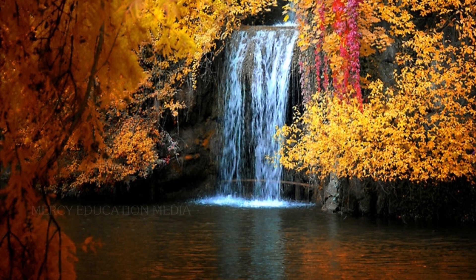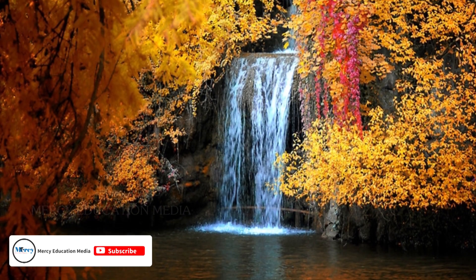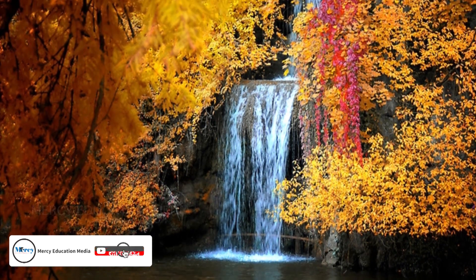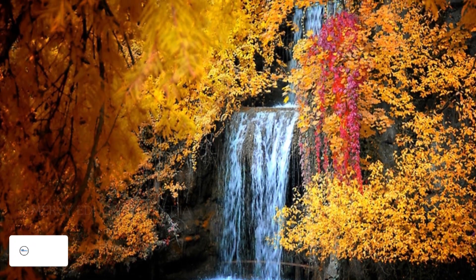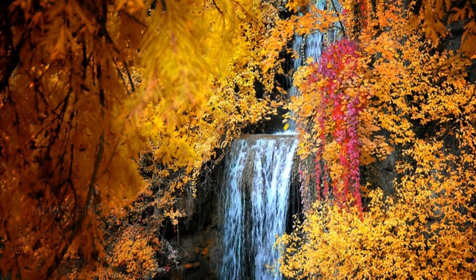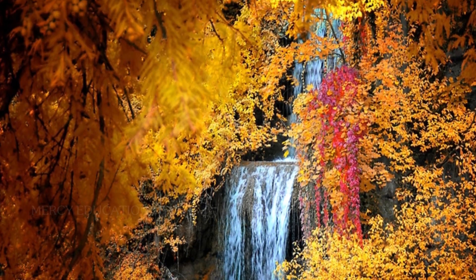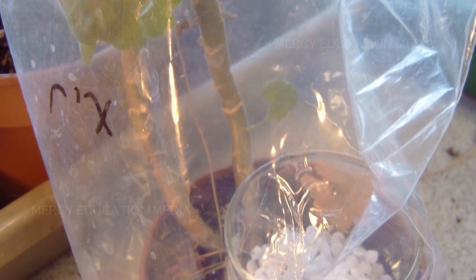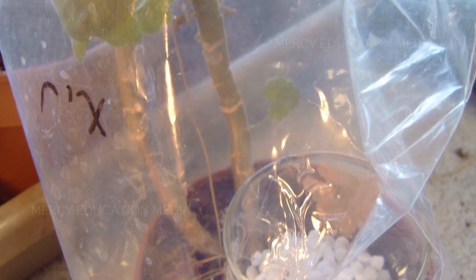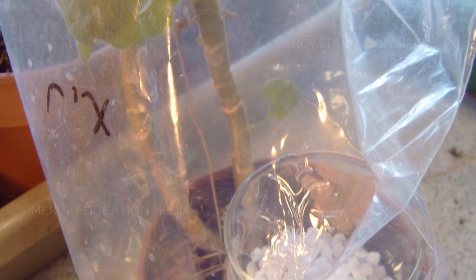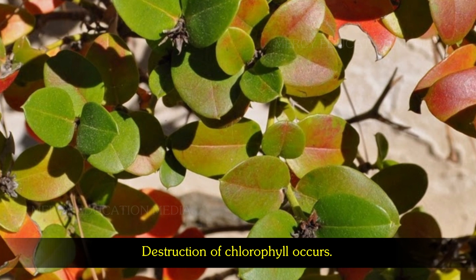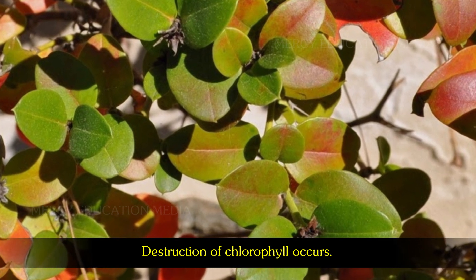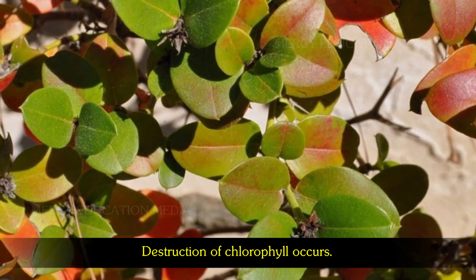For example, if carbon dioxide is available in plenty but light is limited due to cloudy weather, the rate of photosynthesis under such a situation is controlled by the light. But if both carbon dioxide and light intensify, the rate of photosynthesis decreases. This is because of the higher intensity of light causing destruction of chlorophyll.